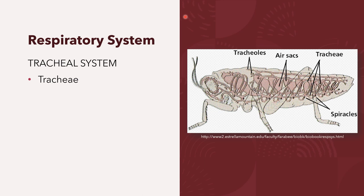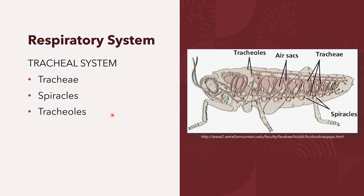The tracheal system consists of the following parts: the spiracles, through which insects breathe — openings in the thorax and abdomen instead of nostrils; the tracheoles, which are the branches of the trachea; and the air sacs, which serve to increase the respiratory efficiency by providing a large surface area for gas exchange.